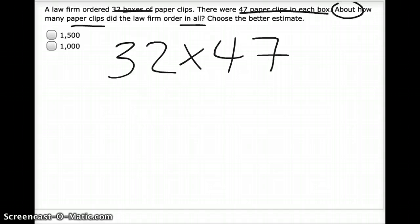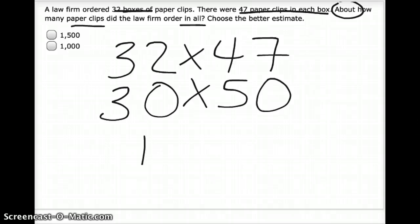You want to stop and look at it. Remember, it wants to round the least amount as you can. Even though taking 47 to 40 would be a fact that I know, it would be taking it a whole lot further than if I take it up to 50. It would only be moving up 3 and it's still a fact that you know. So 32 goes to 30 and 47 we're going to take to 50. 3 times 5 is 15, I've got two zeros in my question, so I'm going to have at least two zeros in my answer. So I'm going to have 1,500 paperclips in all.